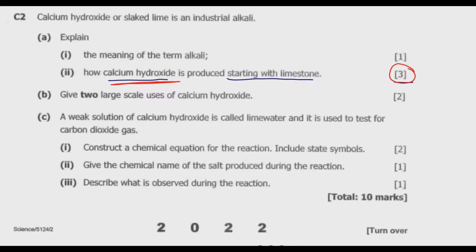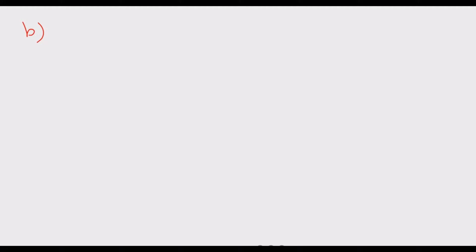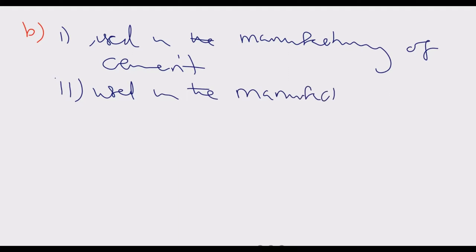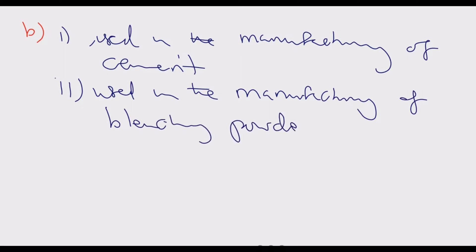Question C2(b): give two large-scale uses of calcium hydroxide. Use one: calcium hydroxide is used at industrial level in the manufacturing of cement.